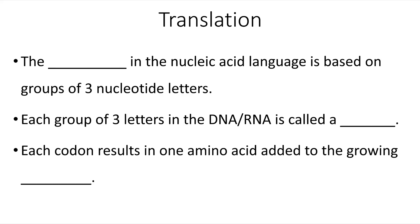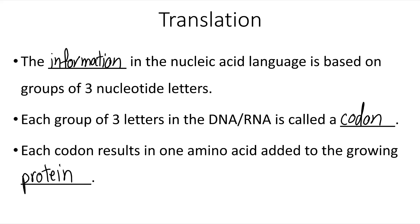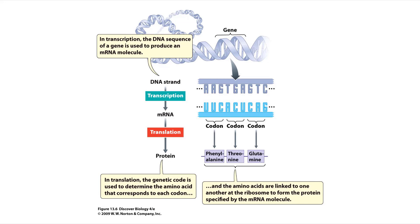Translation is the process of taking the information in the nucleic acid language — which only has four letters — and translating it into the protein language, a language that has 20 different letters or building blocks. The information in the nucleic acid language is based on groups of three nucleotide letters. Each group of three letters in the DNA or RNA is called a codon. Each codon results in one amino acid added to the growing protein.